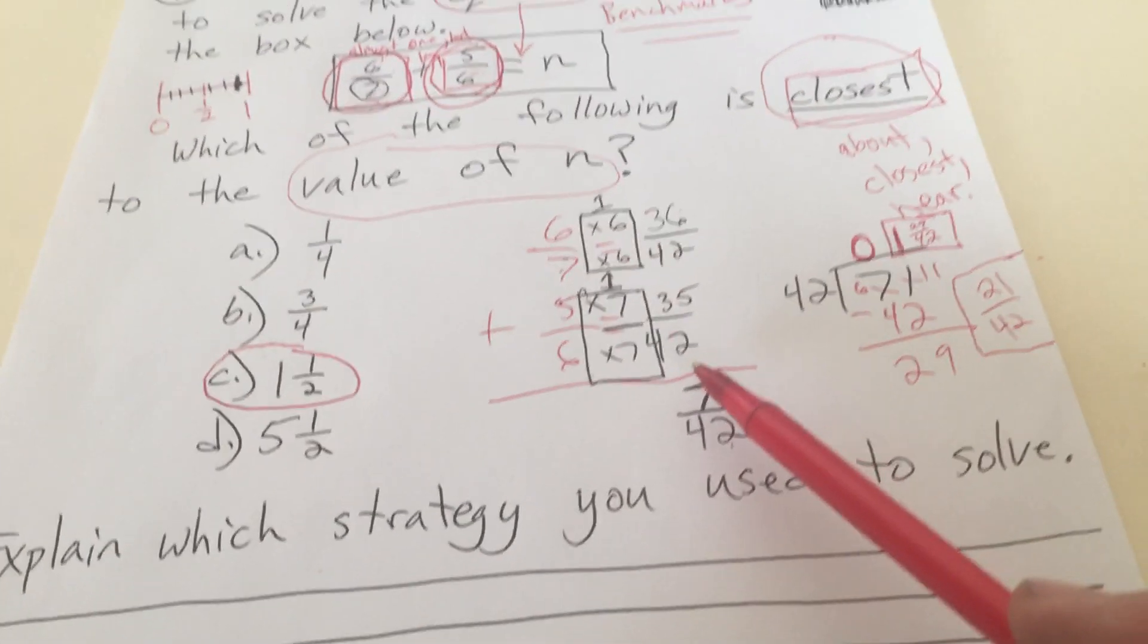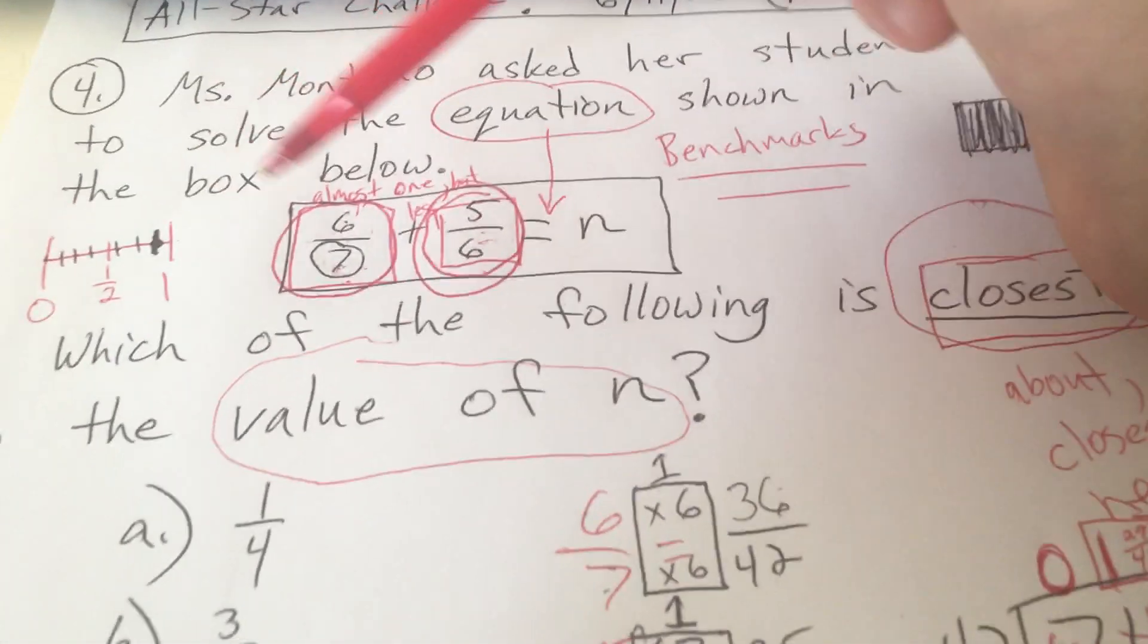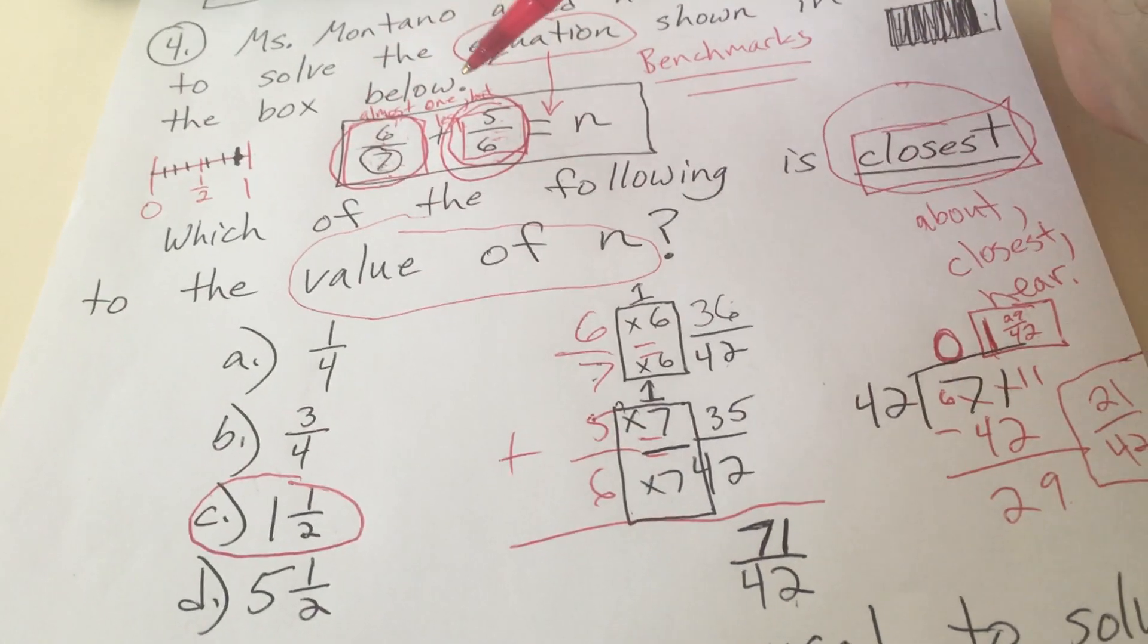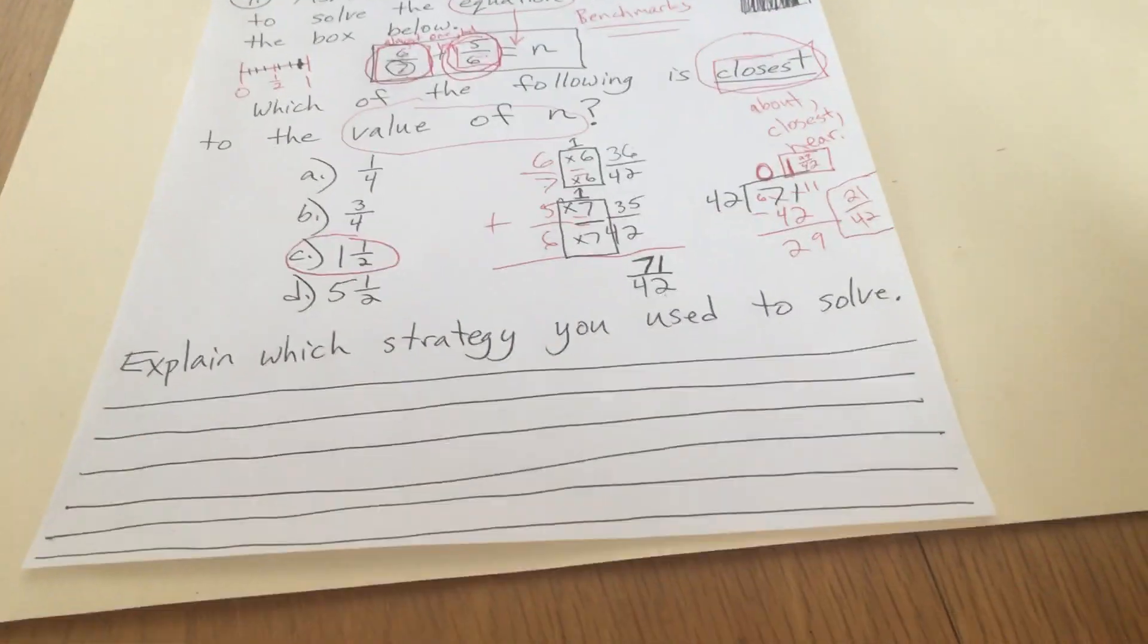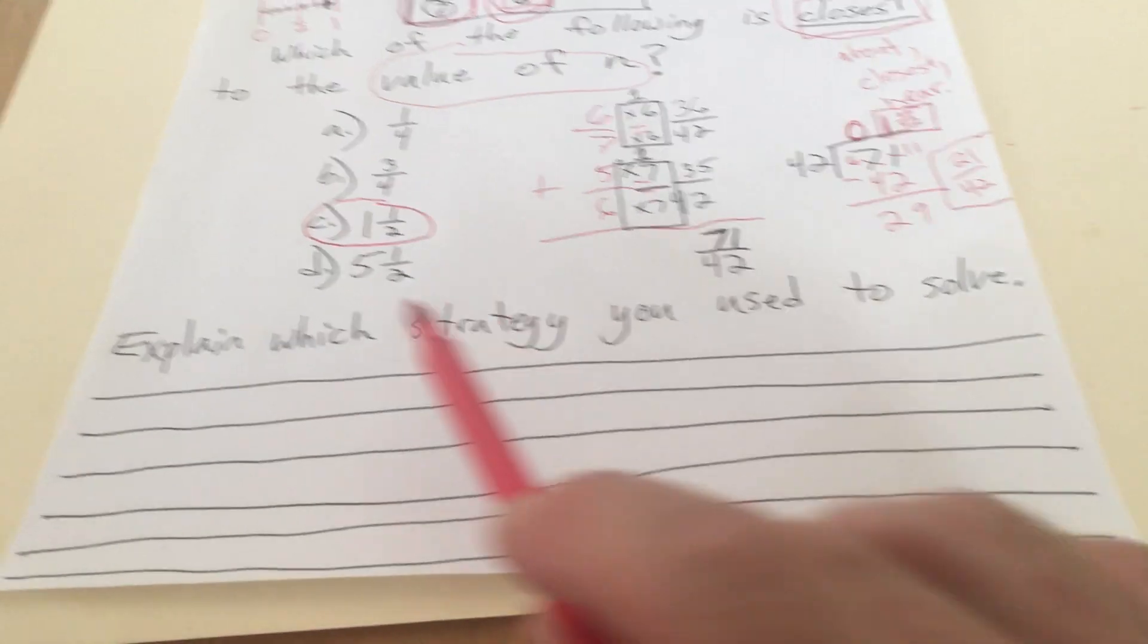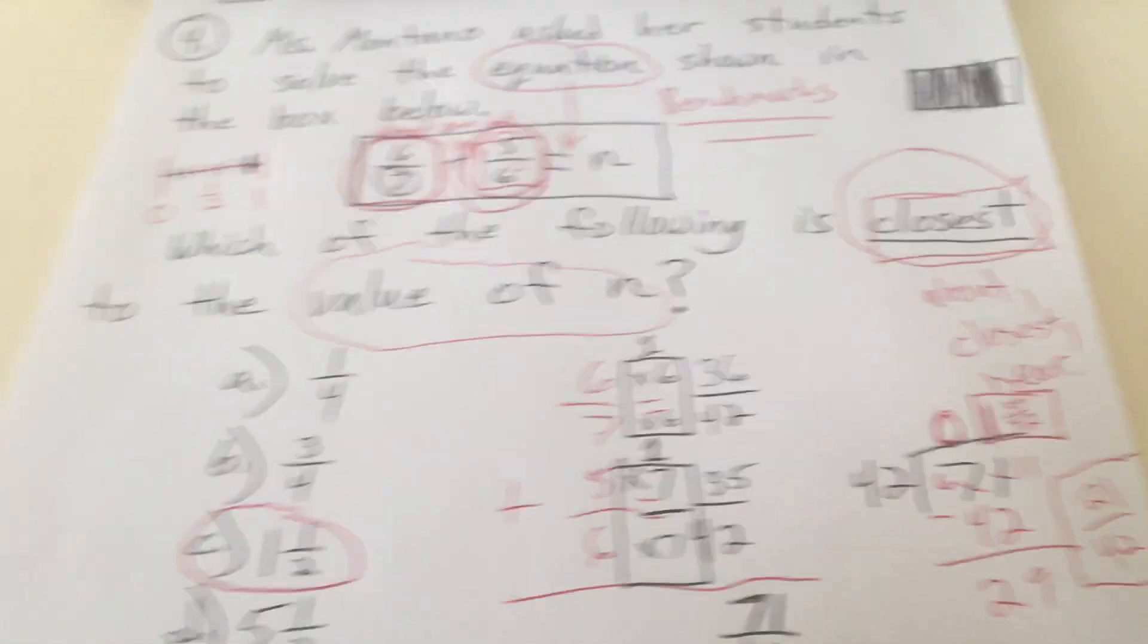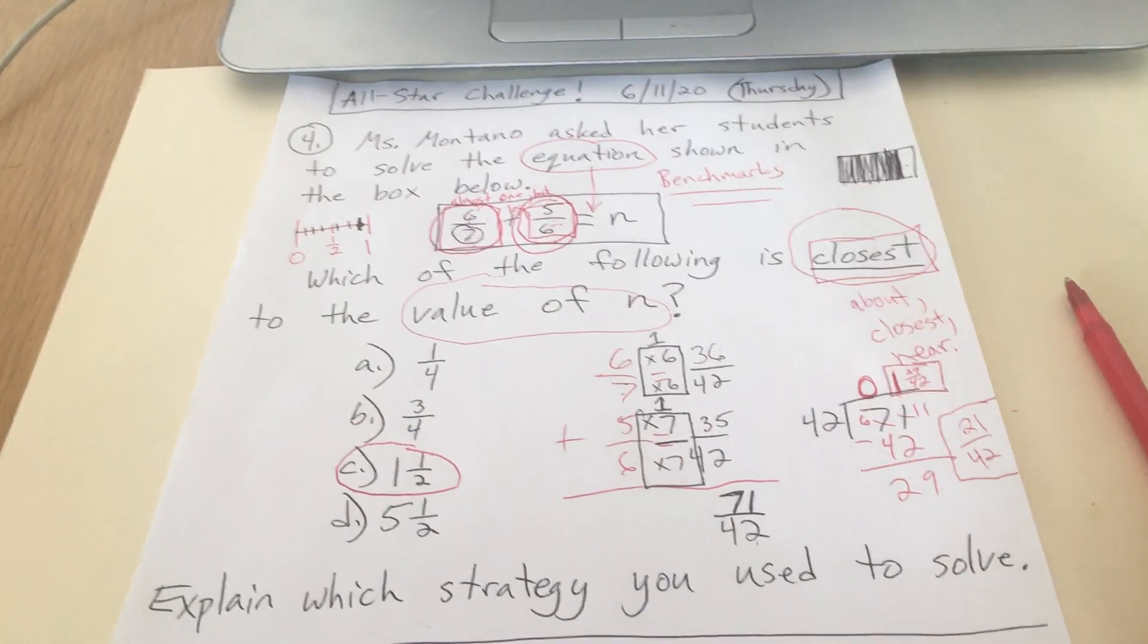So if you did it that way, then the strategy that you used was a little different than mine. I was able to do this pretty quickly by looking at the benchmark. That's about 1, a little less. That's about 1, a little less. So a little less than 1 plus a little less than 1 makes a little less than 2. But there's a couple of different strategies you can use. So I would like you to explain in writing which strategy you used to solve. When you finish writing it, go back and read it over. Make sure that it's clear. Make sure that it shows everything that you understand about this problem. Alright, and that's it. Have a great day, everybody. See you later. Bye.